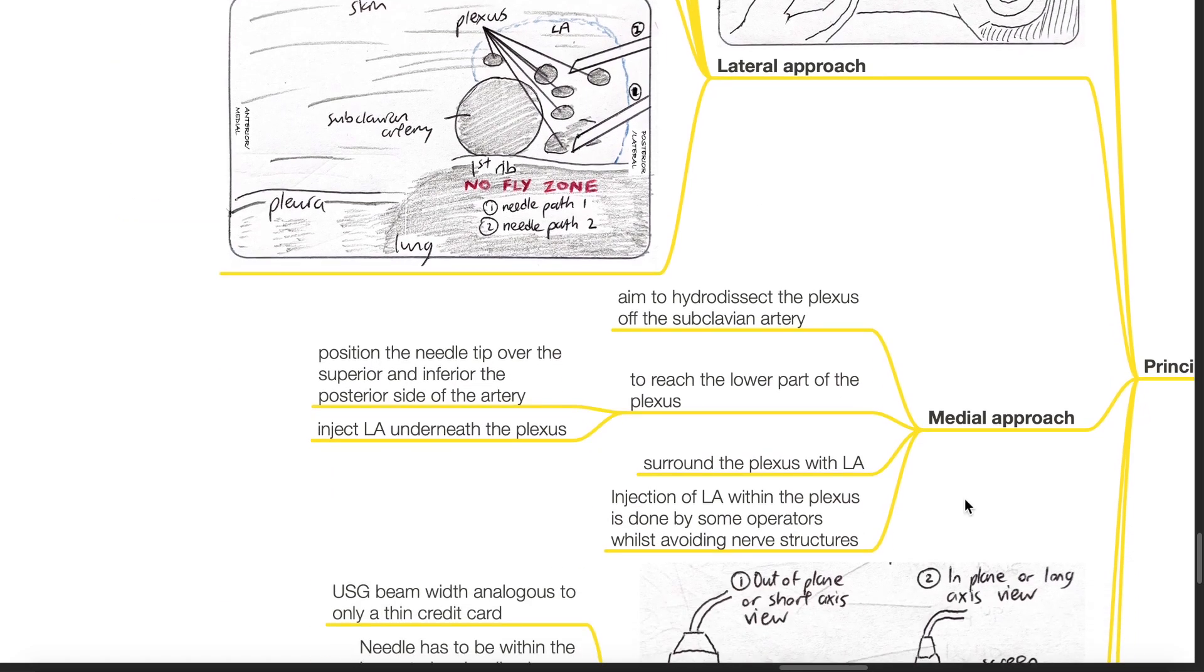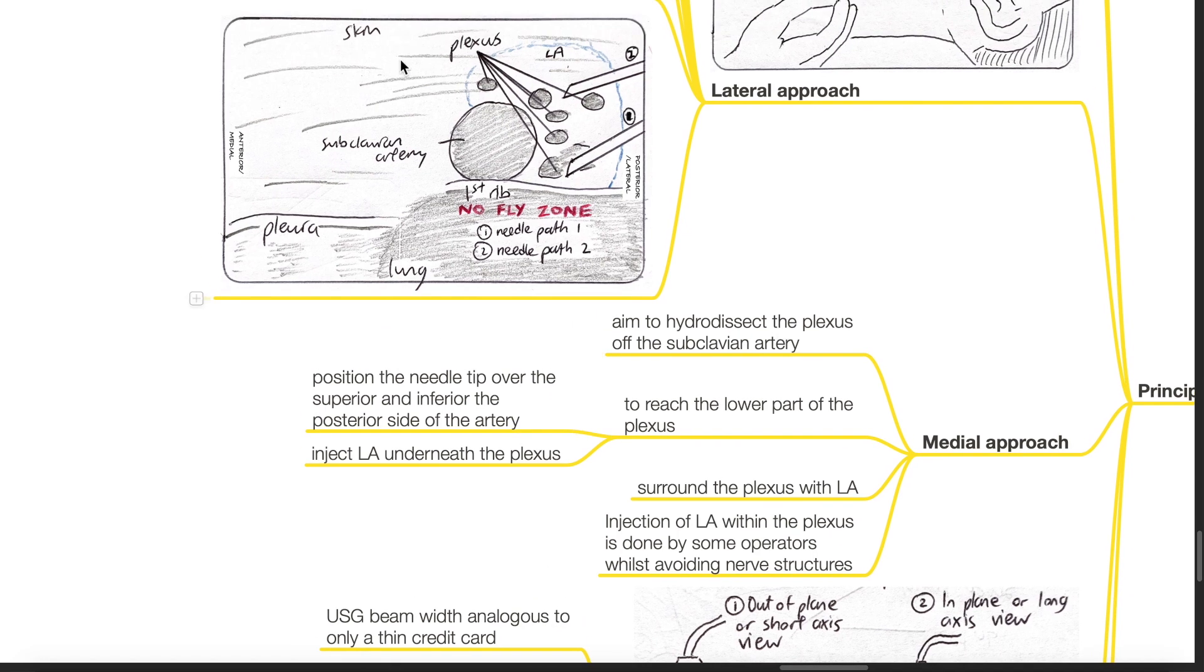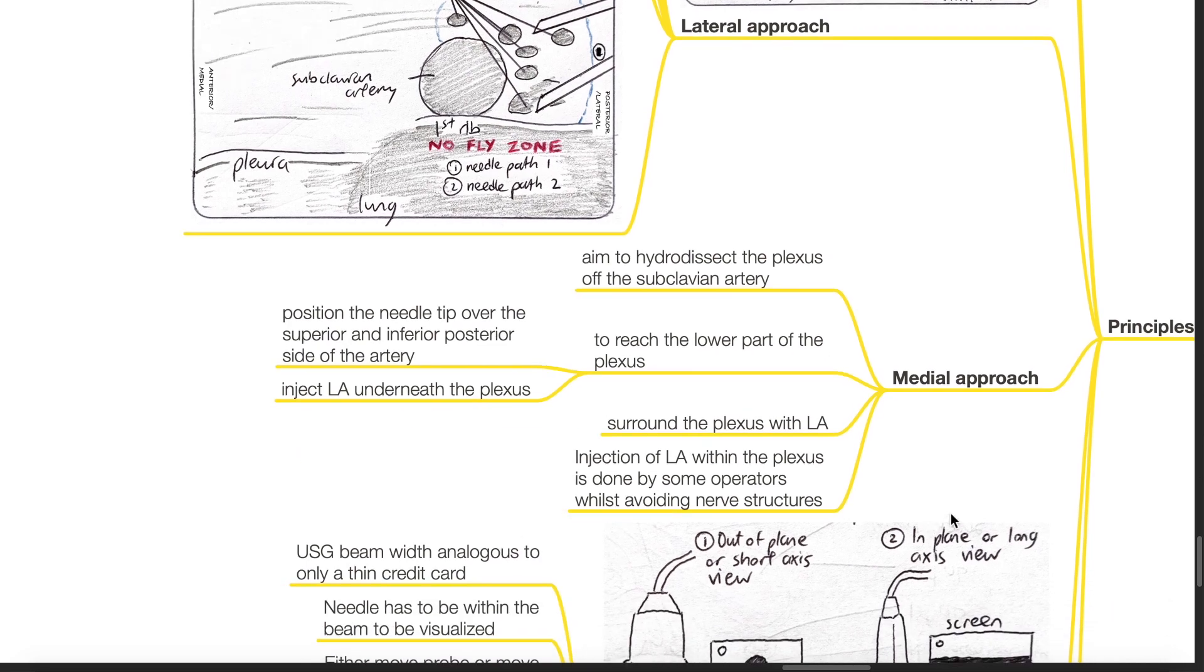Medial approach: aim to hydrodissect the plexus off the subclavian artery. To reach the lower part of the plexus, position the needle tip over the superior and inferior posterior side of the artery. Inject local anesthetic underneath the plexus. Surround the plexus with local anesthetic. Injection of local anesthetic within the plexus is done by some operators while avoiding nerve structures.